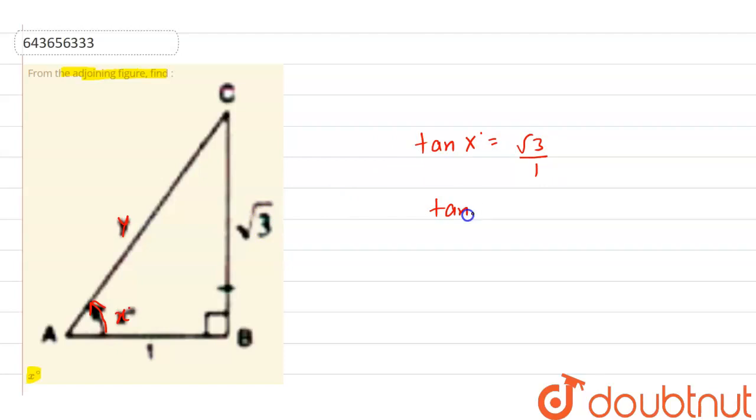So we can write tan of x degree equals root 3, and we know that we can write root 3 as tan of 60 degree.